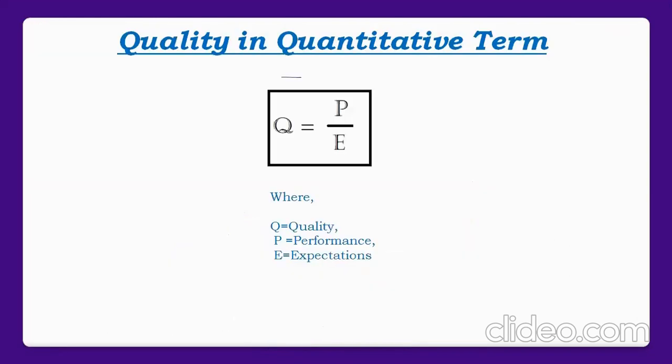If we measure quality in quantitative terms, we can give it as Q equals P upon E — it is the ratio of performance to expectations. Q is the quality, P stands for performance, and E stands for expectation. If performance is greater than the expectation, we can say there is quality — the quality is good. But if the expectations are greater than the performance, then we can say there is no quality or less quality, meaning the product is not fulfilling the quality term. In this way, we can calculate quality.